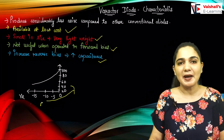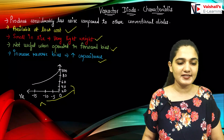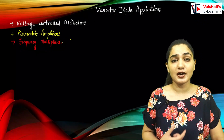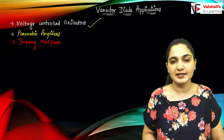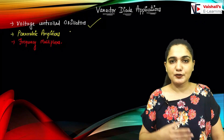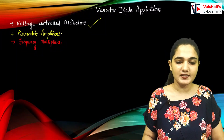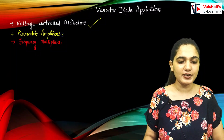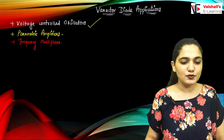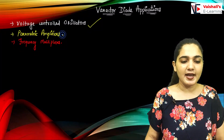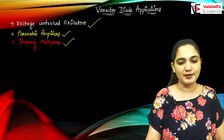Now coming to the various applications of the varactor diode. First, it is used in the voltage-controlled oscillator design, which is used for various communication purposes. It is also used in parametric amplifiers and frequency multipliers.